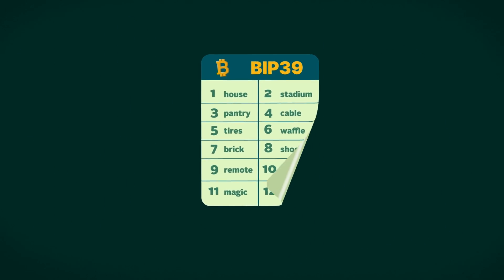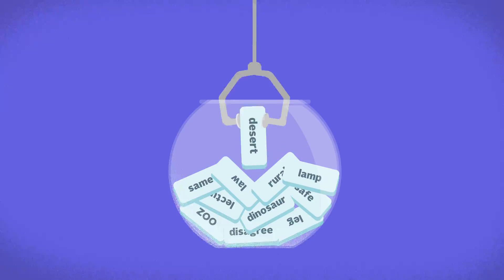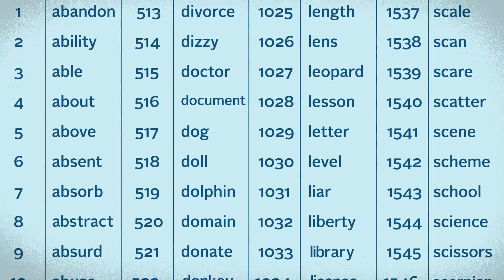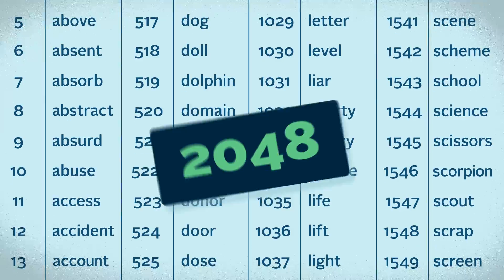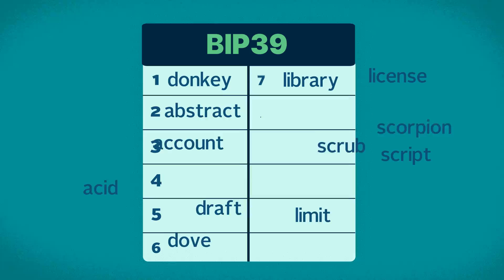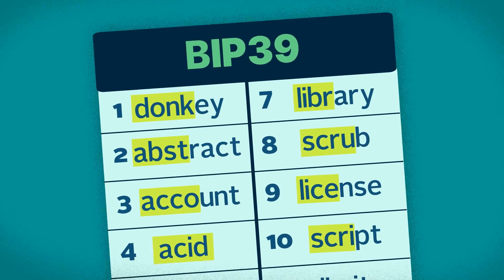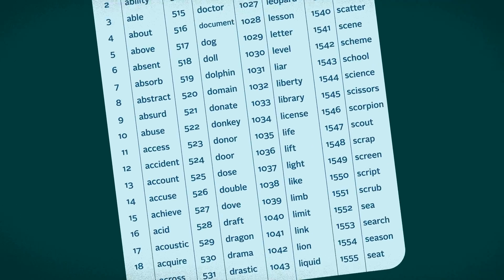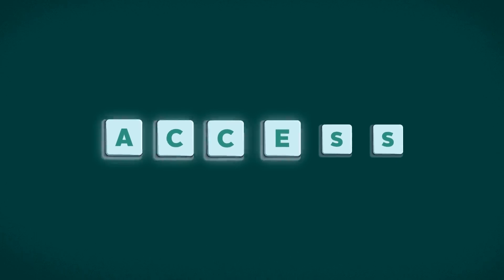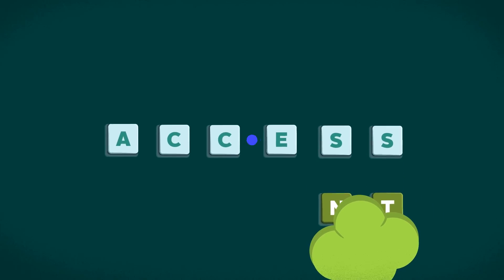Under the BIP39 standard, the generation of seed phrases involves a structured process. The words in your seed phrase are selected randomly, but the words themselves are derived from a predefined list of 2048 carefully selected English words. The word list is designed to be unambiguous, such that the first four letters of each word are unique. For instance, let's take the 11th word on the list, ACCESS. The first four letters, A-C-C-E, are unique, so there wouldn't also be the word ACCENT, which shares the same first four letters, in the list.